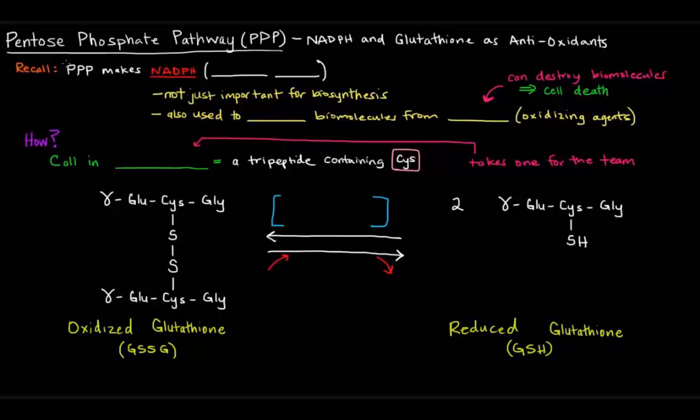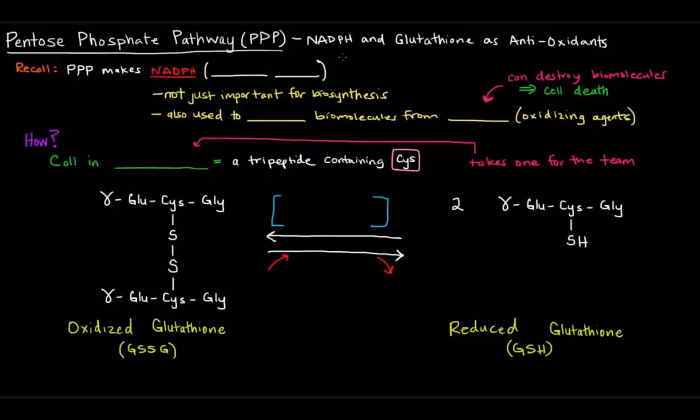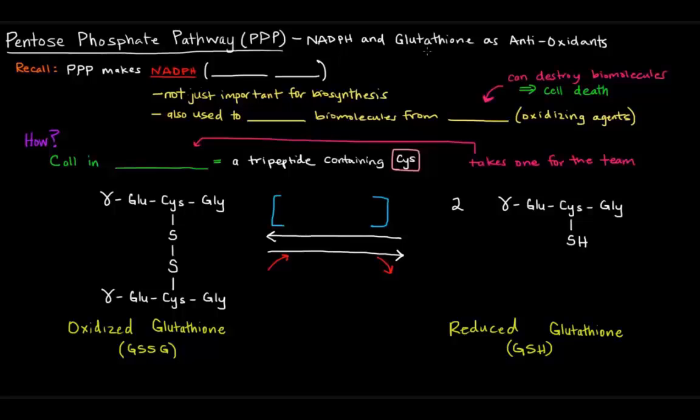In this video, I want to further our discussion of the pentose phosphate pathway and talk specifically about NADPH and glutathione and how they act as antioxidants and how the pentose phosphate pathway is involved. We said that the pentose phosphate pathway makes NADPH, and we said that NADPH provides reducing power. Now, what did we say that reducing power was useful for? We said it was useful for biosynthesis, but it's not just important for biosynthesis. It can also be used to protect biomolecules from oxidants.